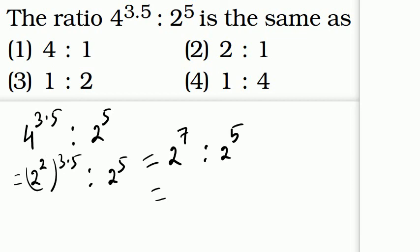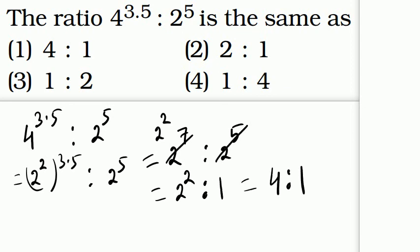Here the number of 2s is 7, and here it is 5 — that is 2 to the power 5. So 2 to the power 7 cancel out with 2 to the power 5, leaving 2 to the power 2, that is 2 squared, which is 4 is to 1.